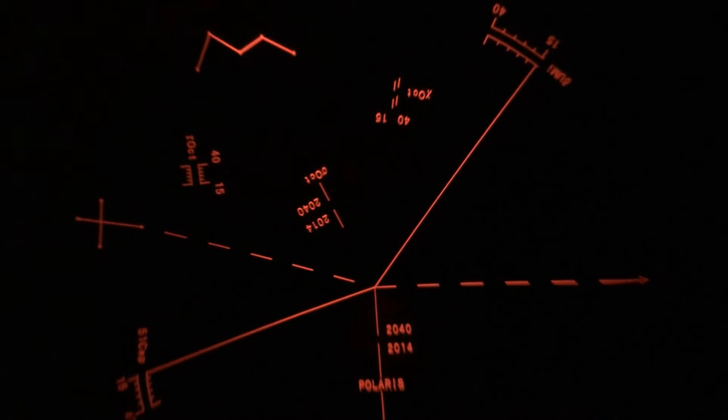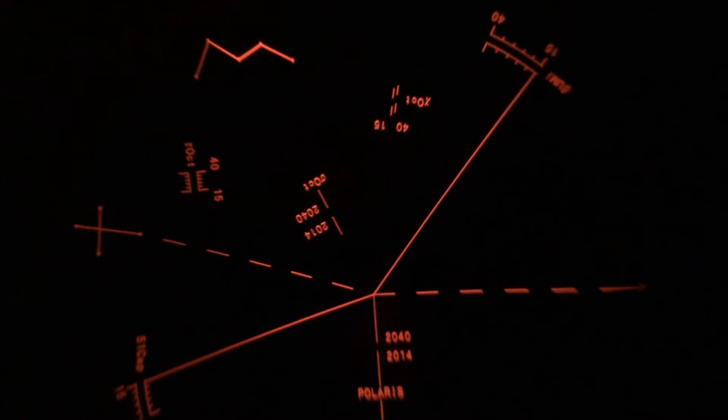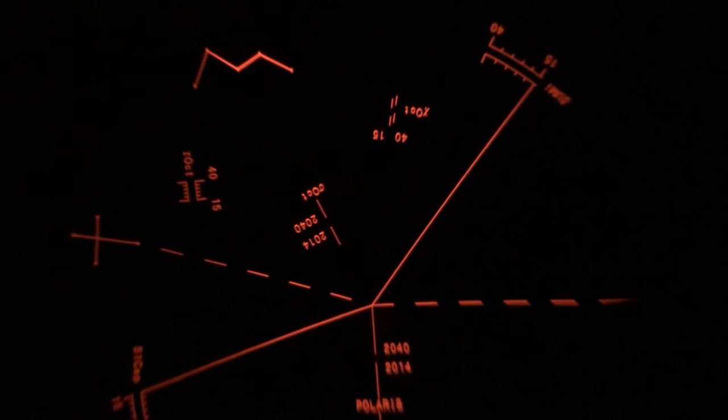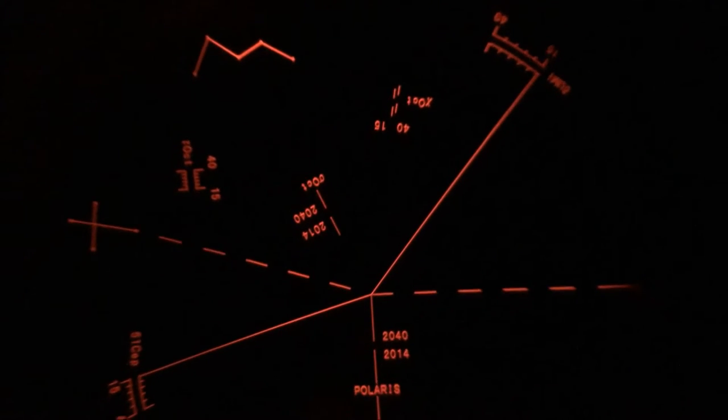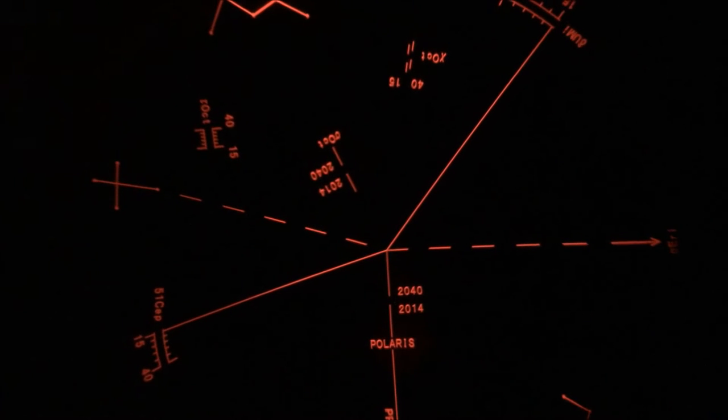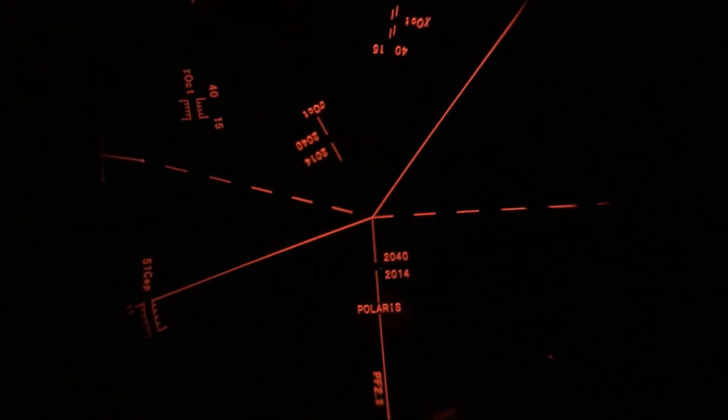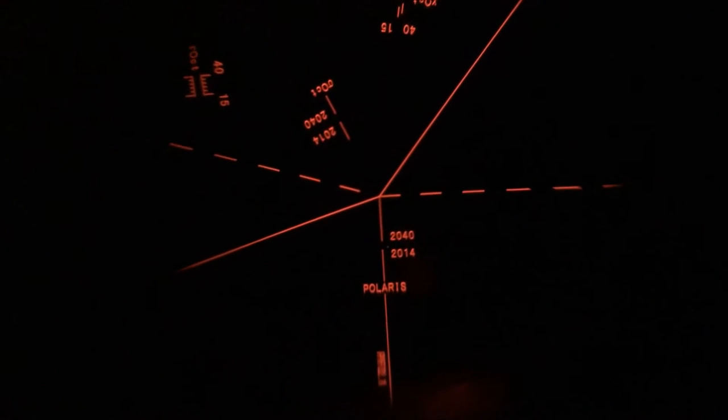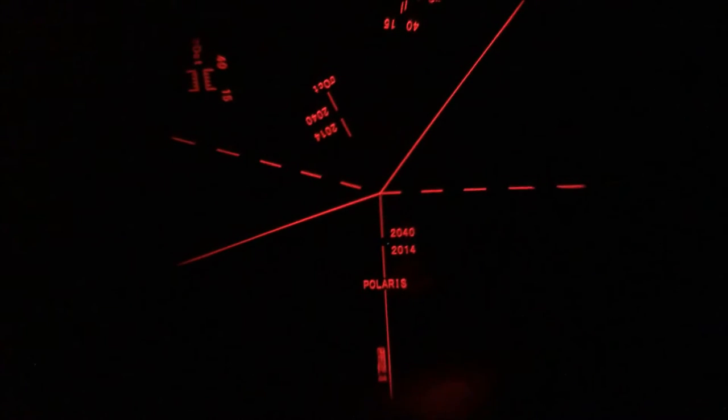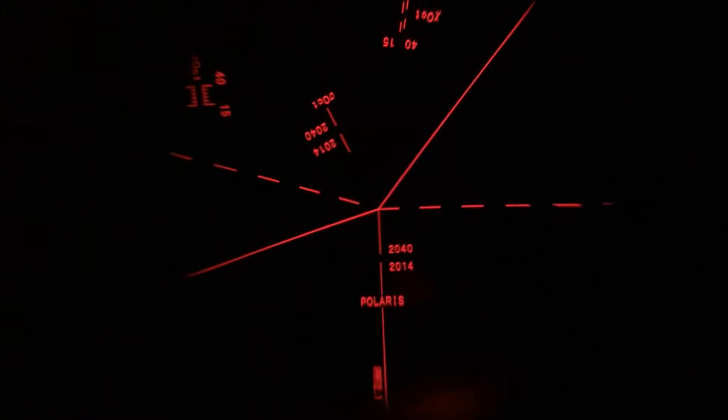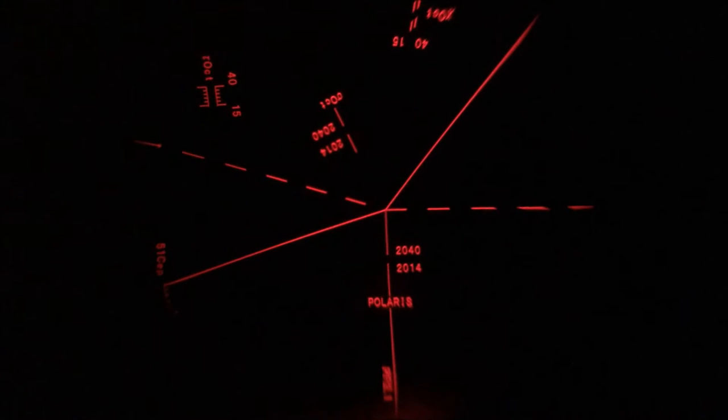There's Cassiopeia and Ursa Major also visible on the reticule to give you a basic orientation in the sky.